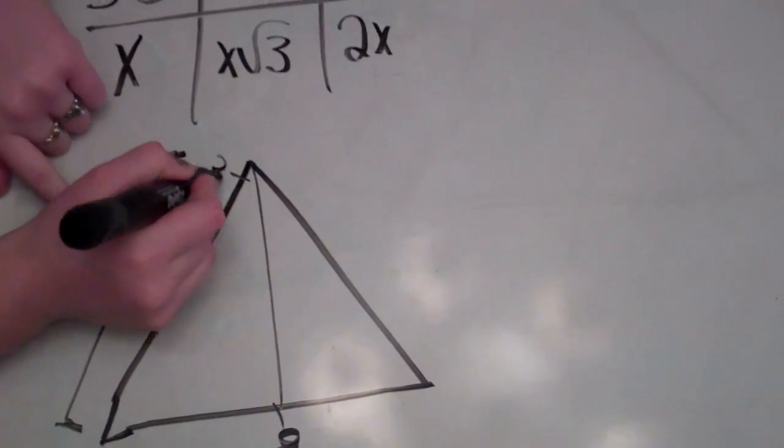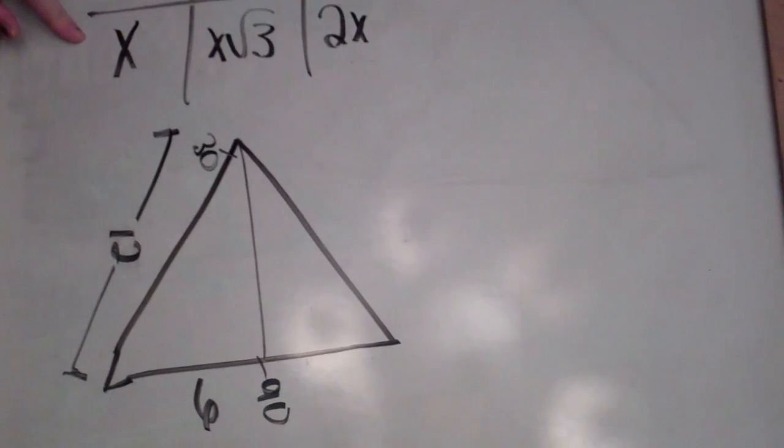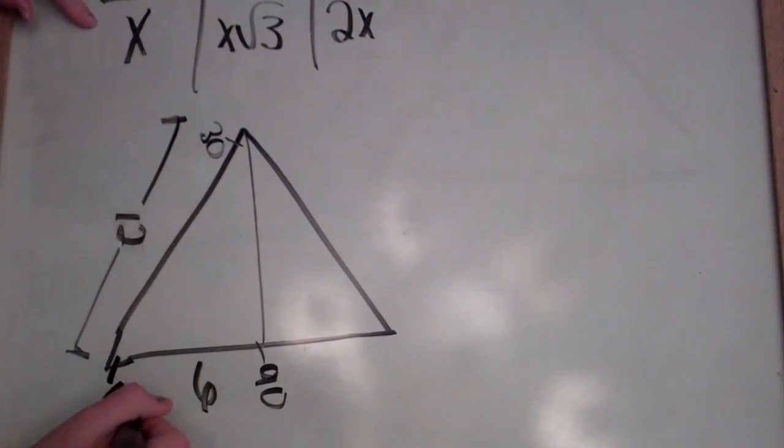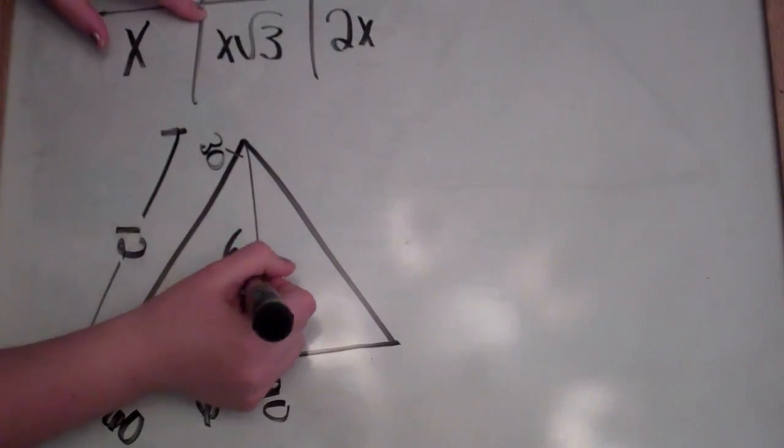Across from our 30 degree angle is x. 12 divided by 2 is 6. And across from the 60 degree angle is x square root of 3, or 6 square root of 3.